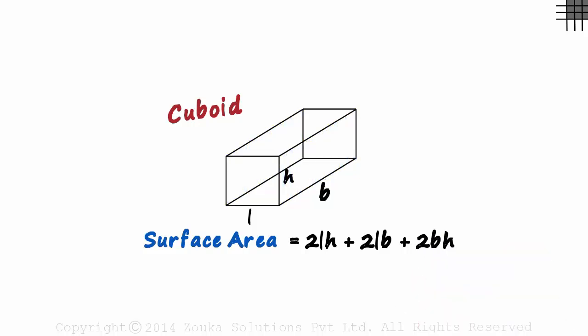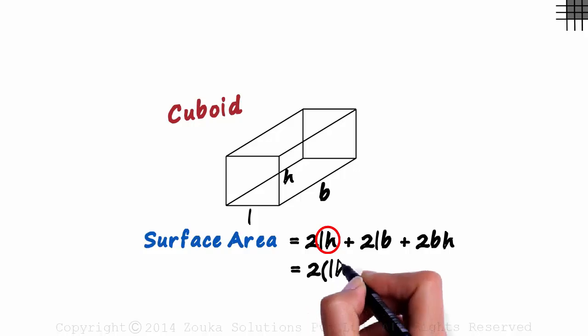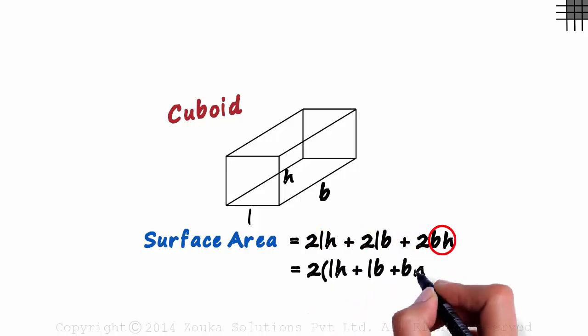That's the total surface area of a cuboid. Taking the factor 2 common, we can write it as twice LH plus LB plus BH.